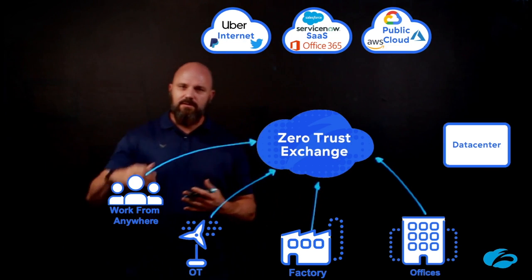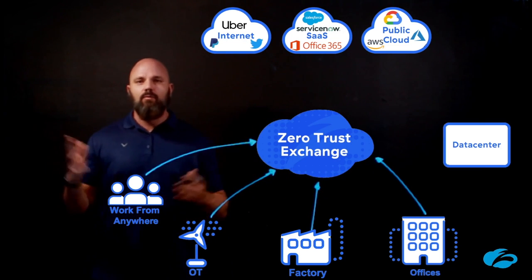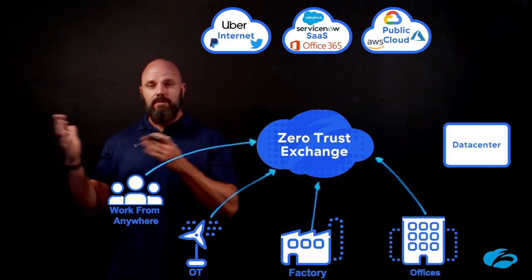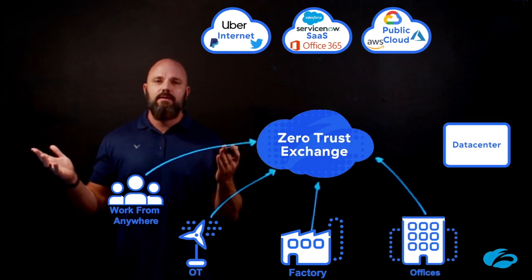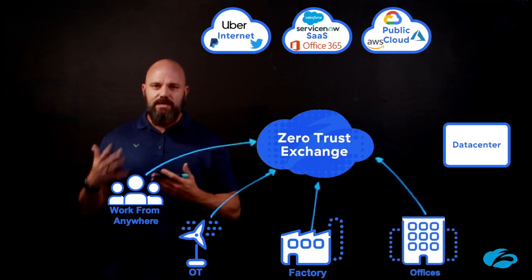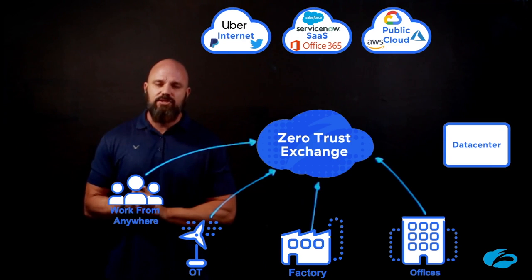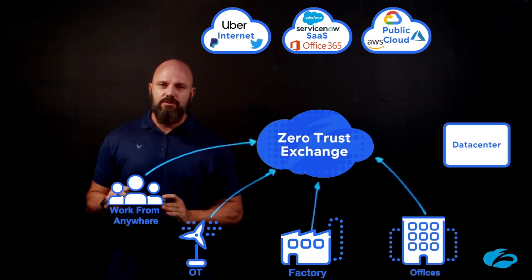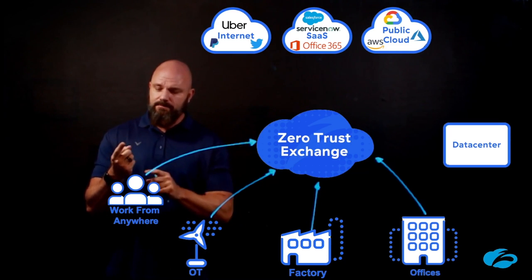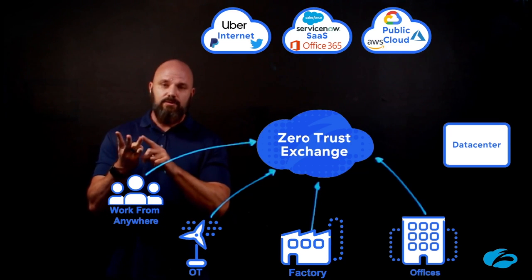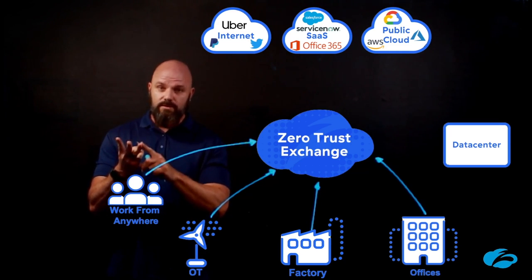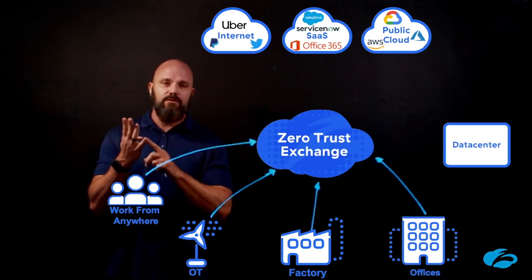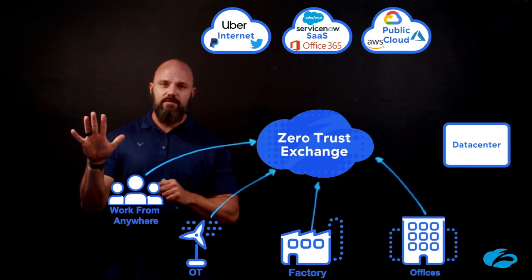Now, historically you may have thought we're just going to allow or block. But it's changed with the Zero Trust Exchange platform. You actually have five full different things that you can do: you can allow, you can block, you can warn the user, you can isolate, and you can deceive.